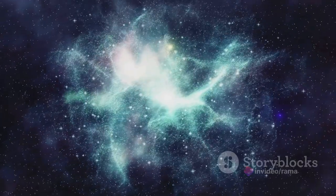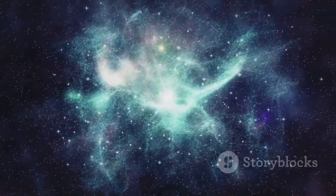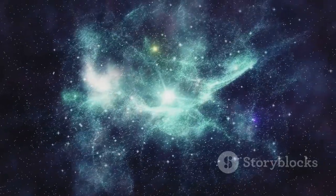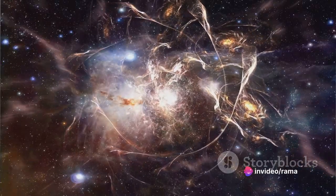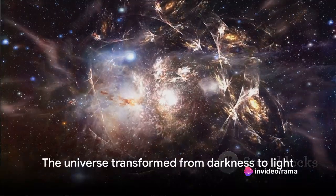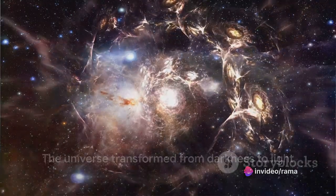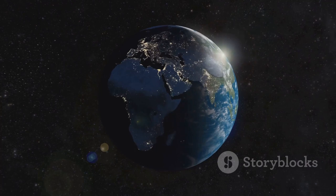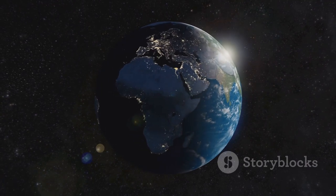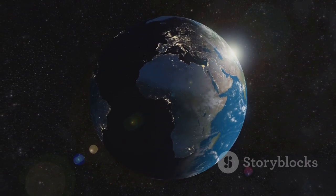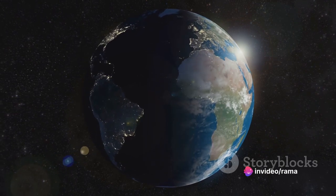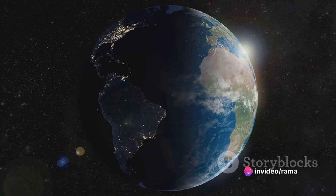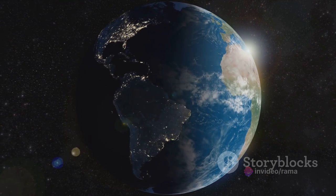As more and more stars formed, they began to group together, drawn in by their mutual gravitational pull. These groups of stars eventually formed what we now know as galaxies. And thus, the universe was no longer a dark place. It was now filled with stars and galaxies. These celestial bodies born from gas and dust, brought light to a universe that had previously known only darkness. This was the dawn of the era of first light, a time when the universe began to resemble the familiar night sky we see today.